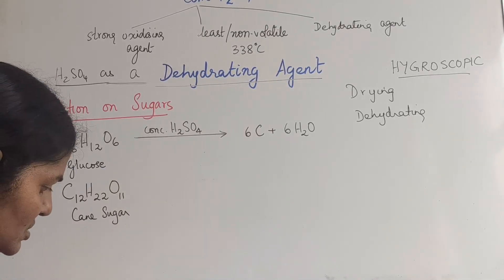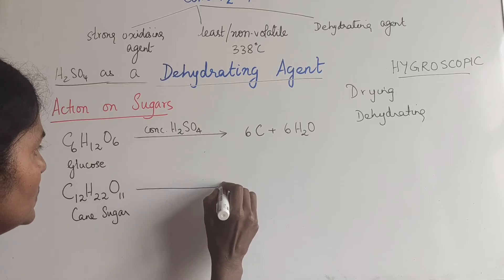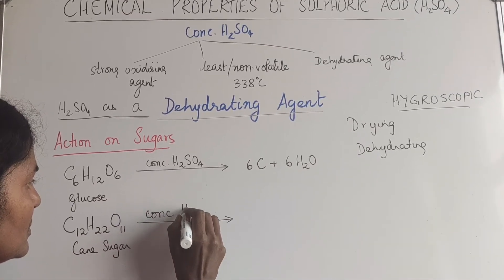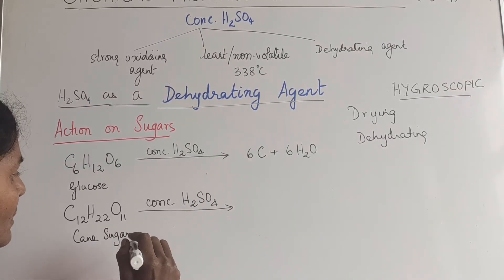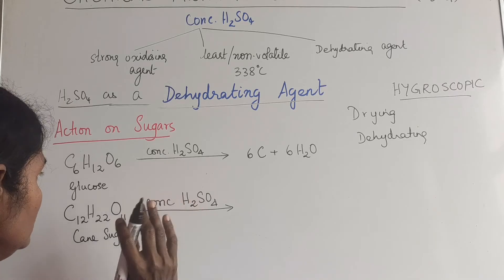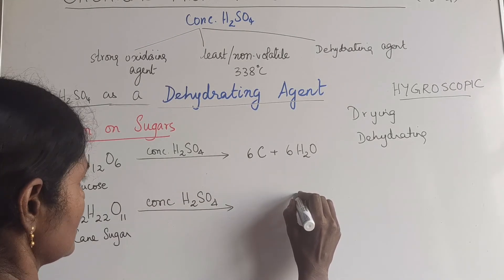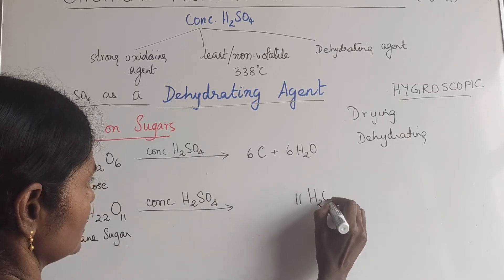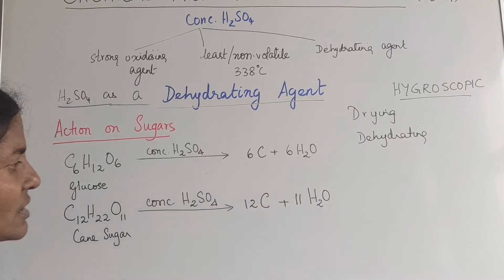Now going into this cane sugar. When concentrated sulfuric acid is added to cane sugar, sometimes sugar cane, this can be sugar crystals also. Then how many are there? You get 11 molecules of water. And what is left out is 12 atoms of carbon.